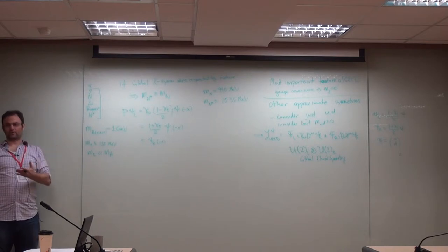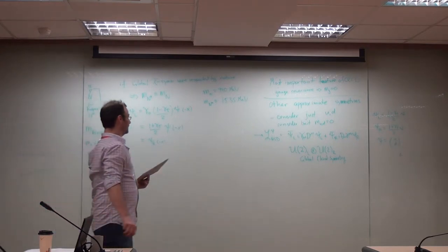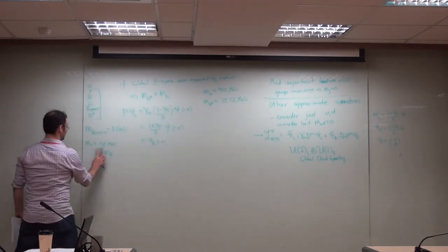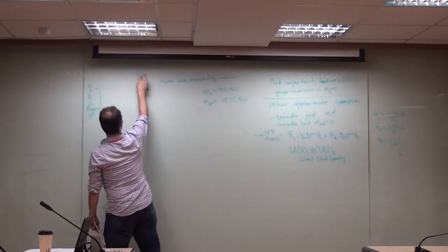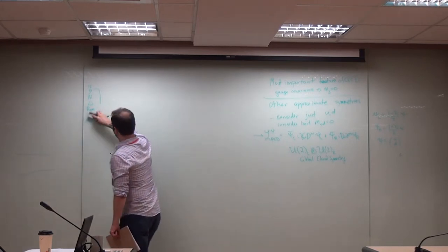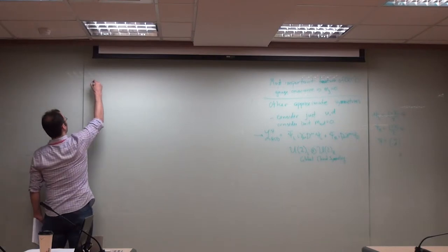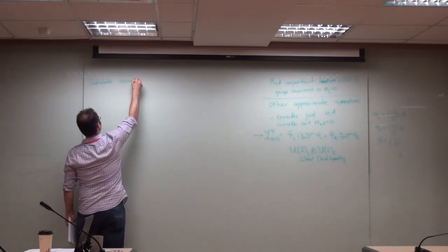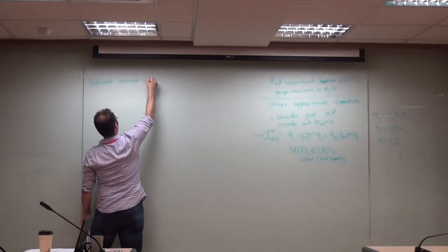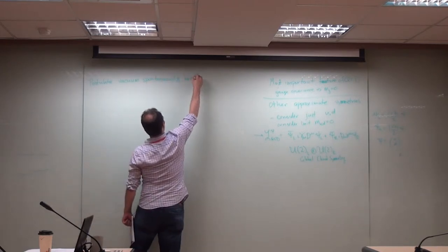We can develop a perturbation theory in this light quark expansion — that's chiral perturbation theory. The postulate is — and I say postulate because we can't actually prove this with pen and paper — we can only make the postulate and see how the predictions compare with the real world and with lattice QCD. And there's actually no indication that this is wrong.